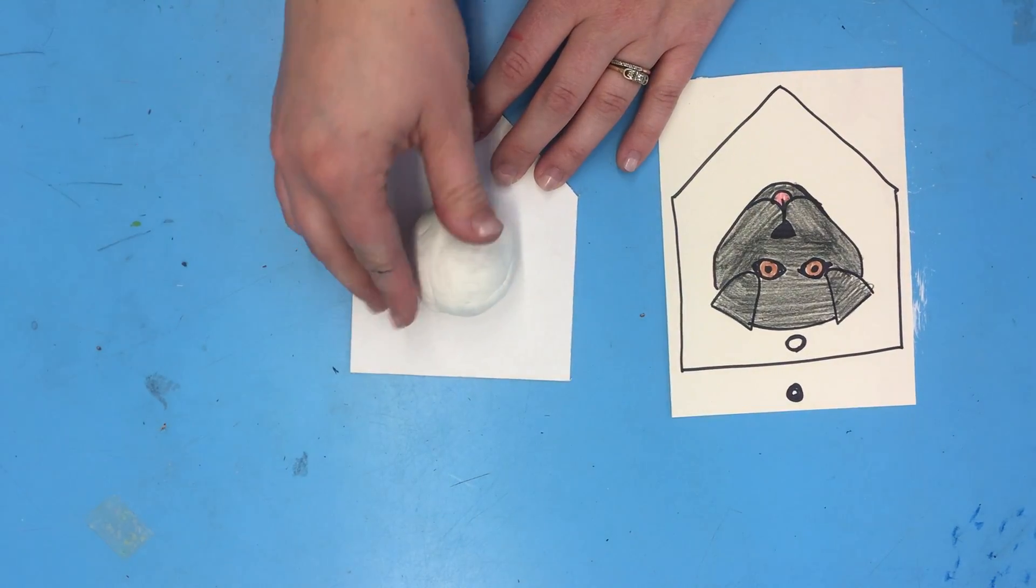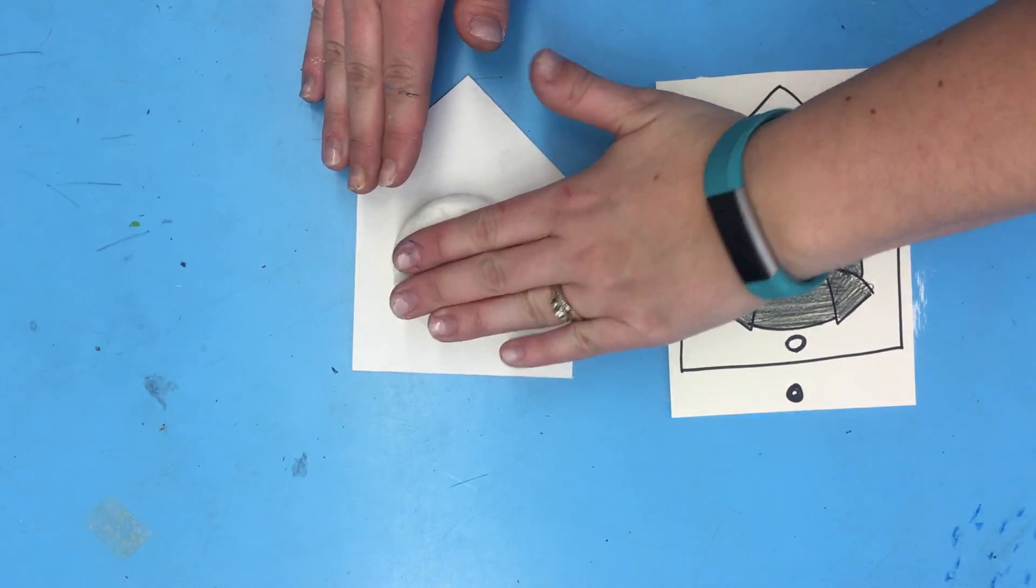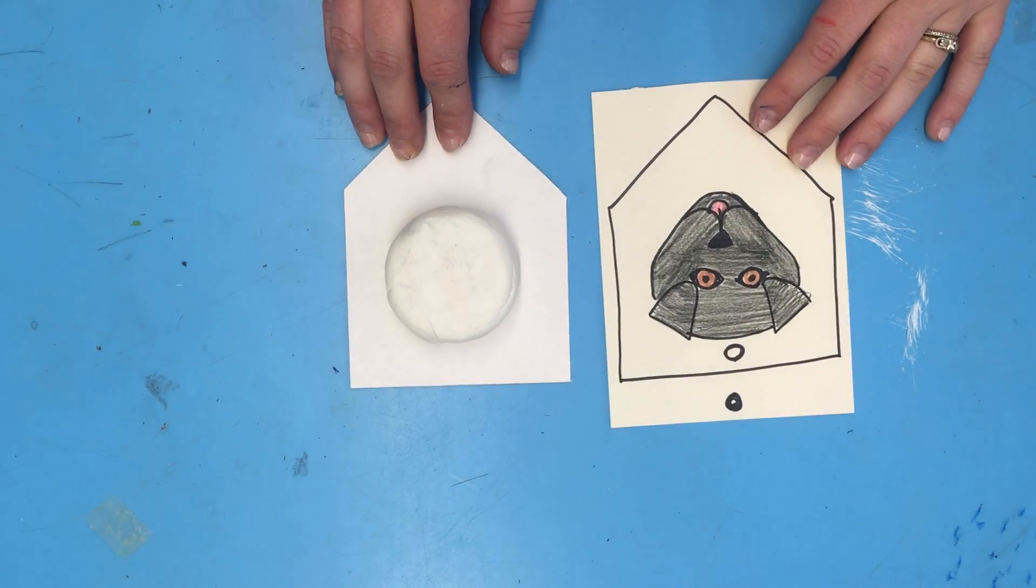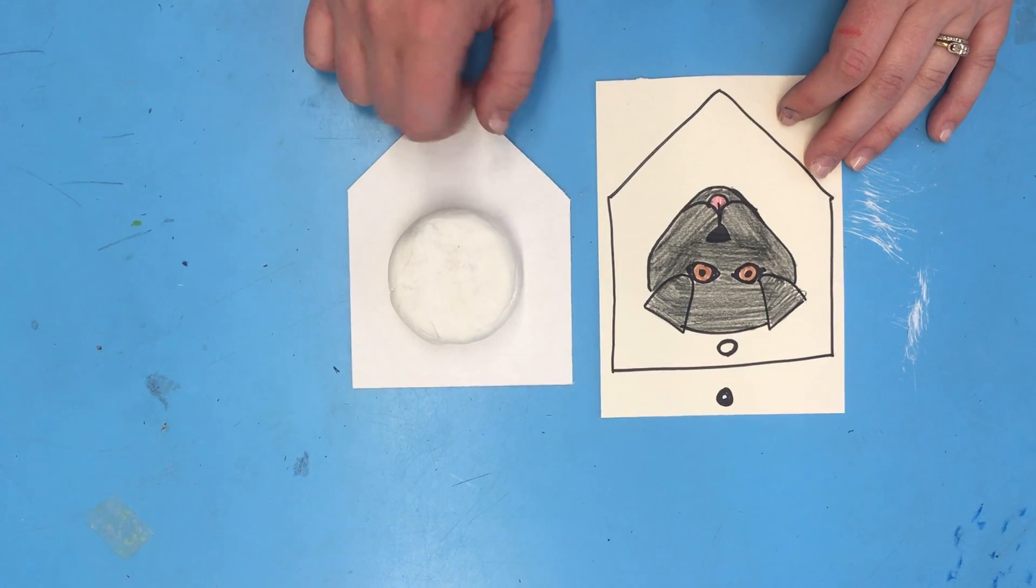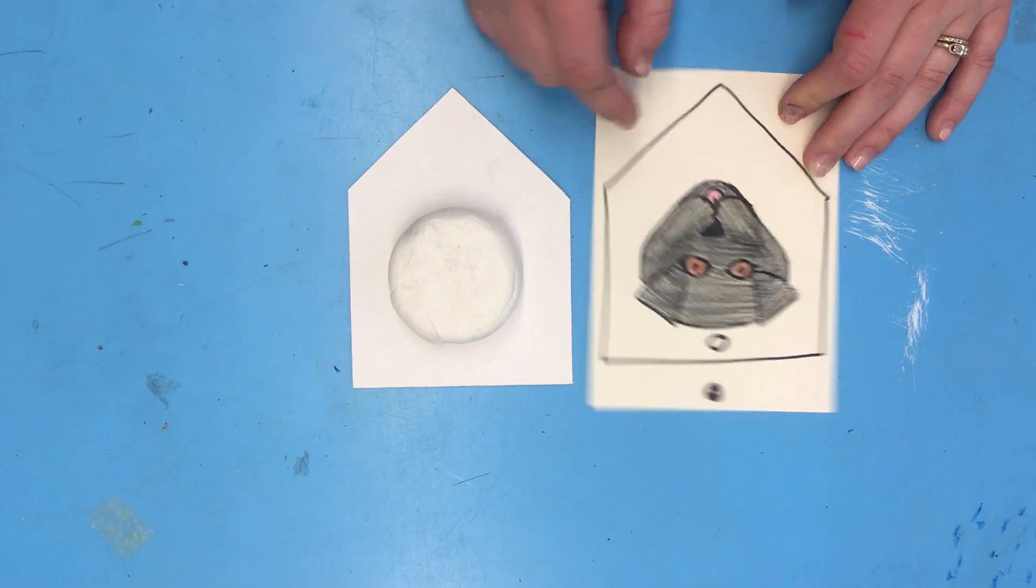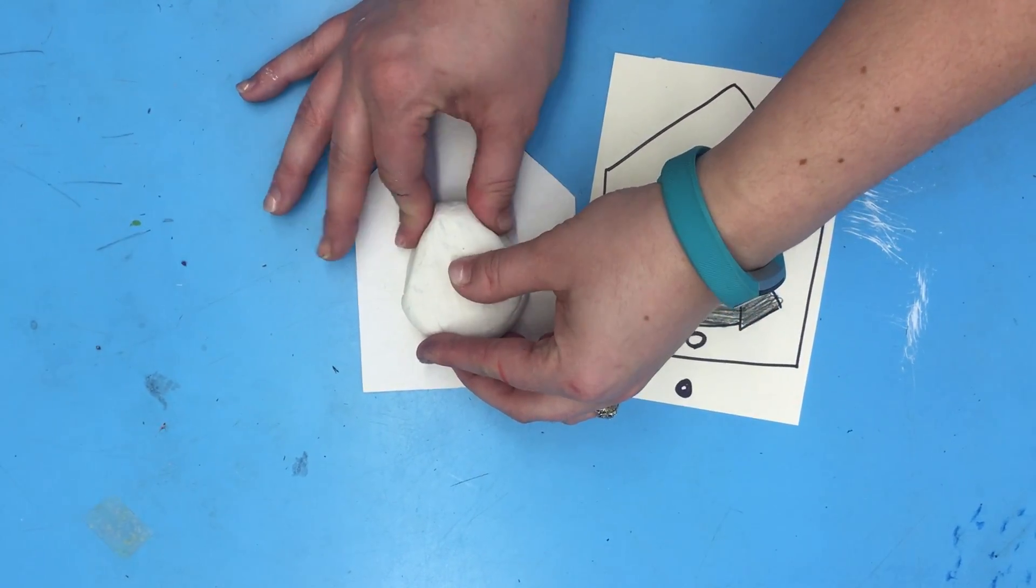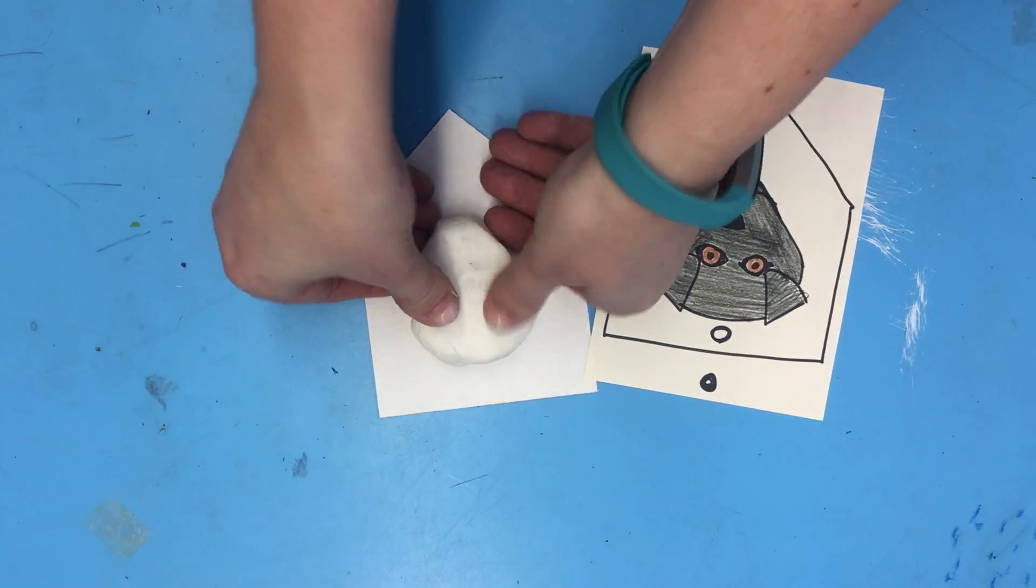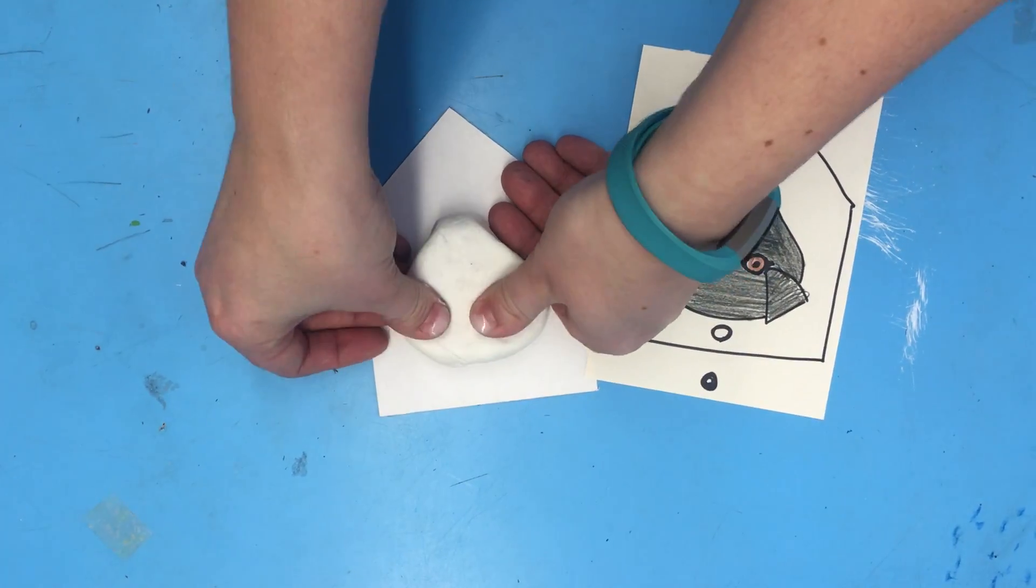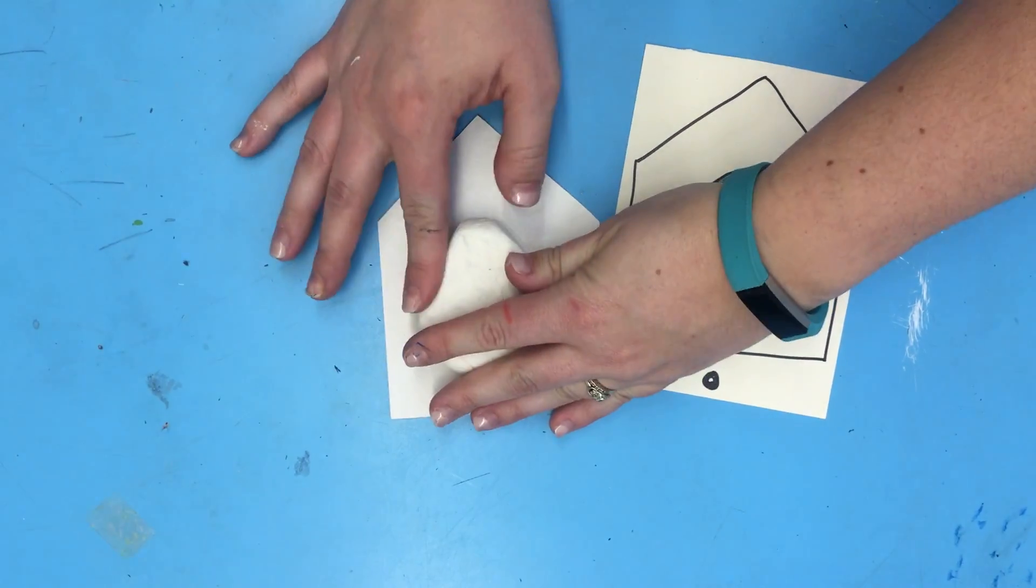Once it's rolled into a little ball, you're going to squish it with your hand. Now some of our animal heads are circular like this, but you can see mine is a little bit of a triangle. So I'm just going to pinch to make it the same shape as the head that I designed. If you designed a circular head, you can leave it that way.